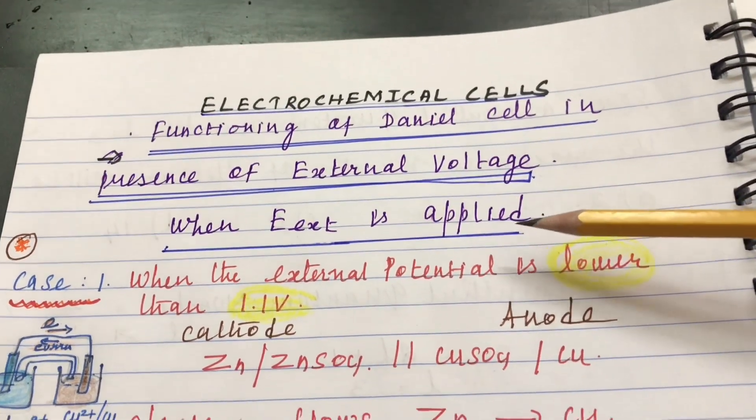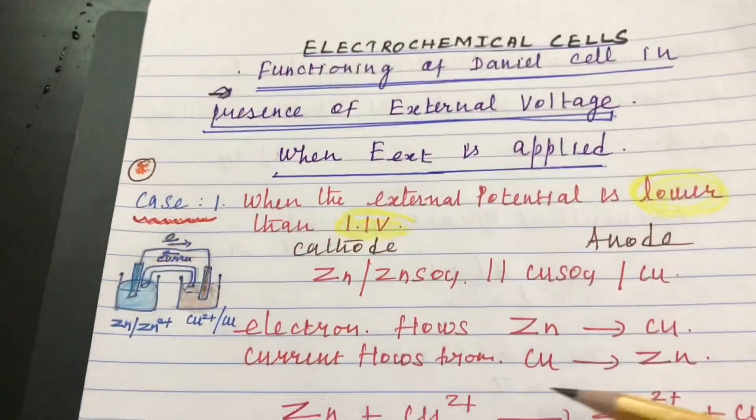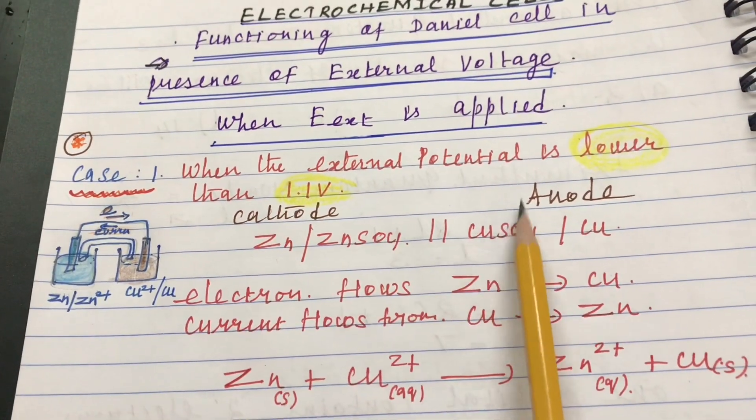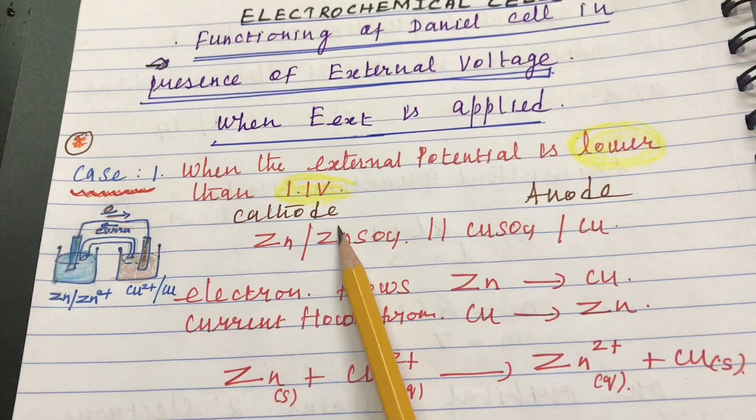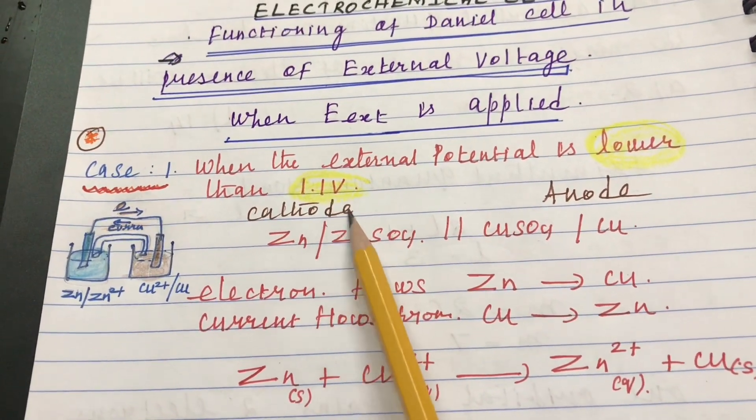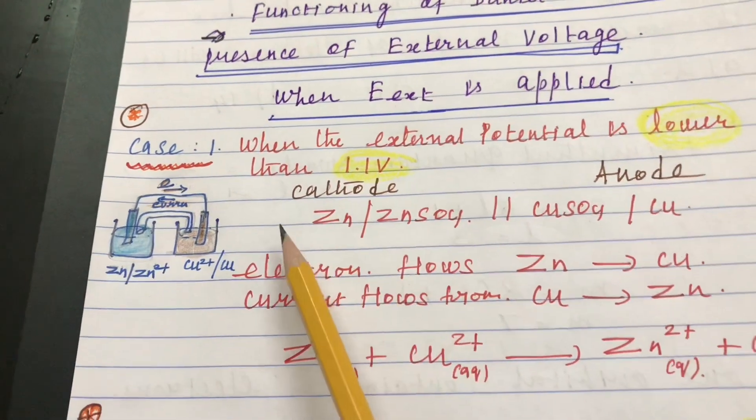There are three cases possible. We are going to see one by one. Case one: when external potential is lower than 1.1 volt is applied in the Daniel cell,